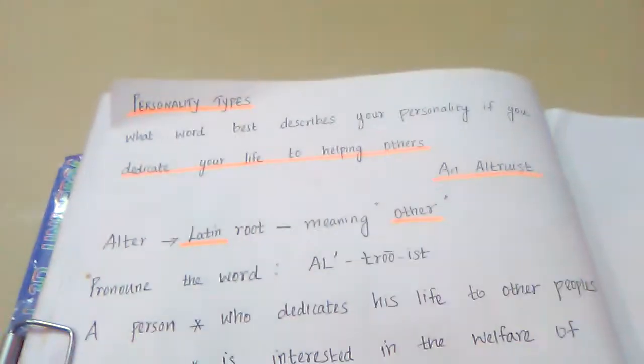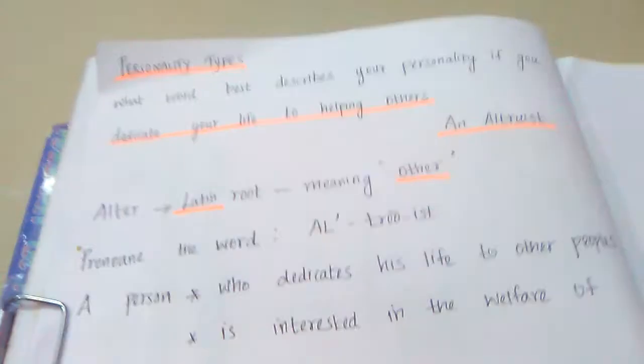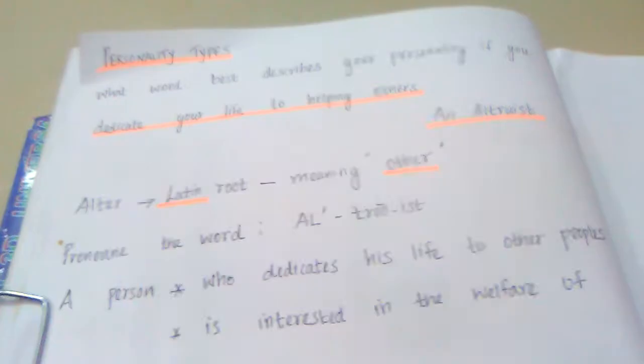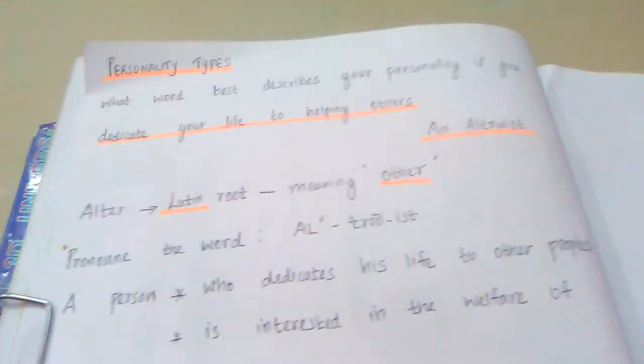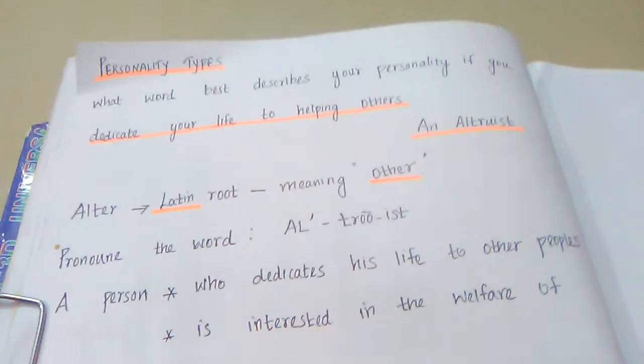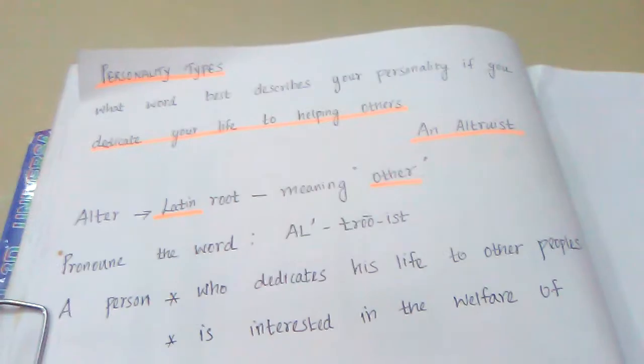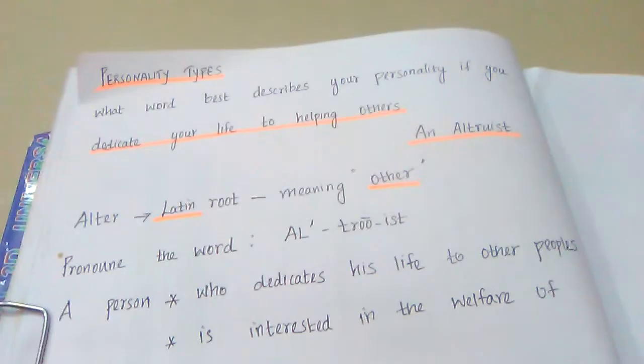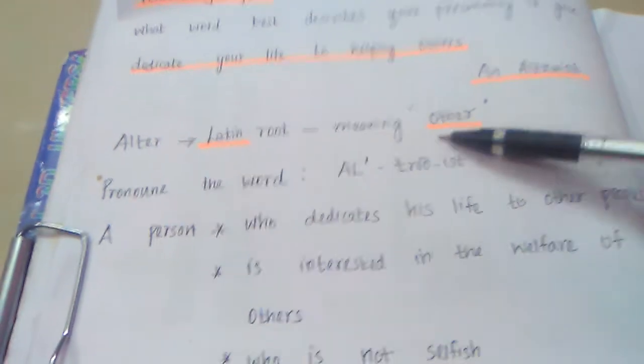So who is an altruist? Those persons who discover the secret of true happiness concerning themselves with the welfare of others, never mind their own interest. The word alter comes from the Latin root meaning other.